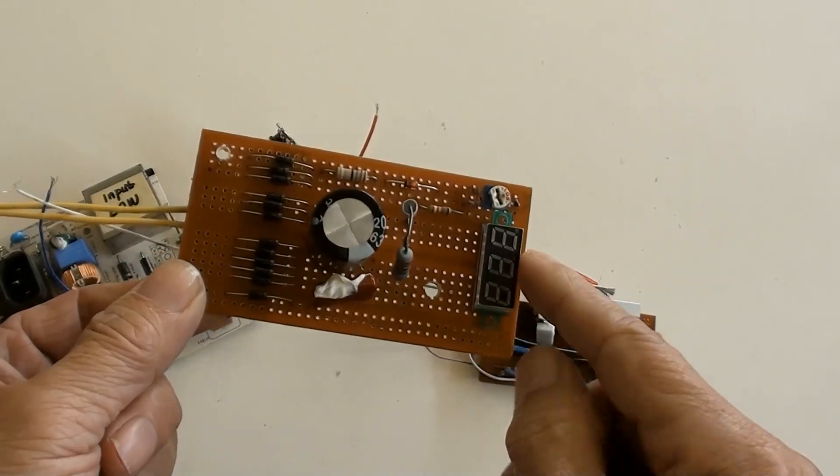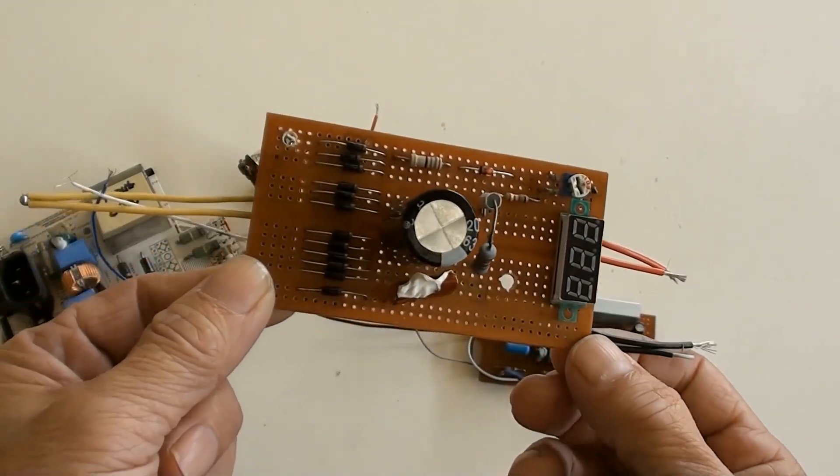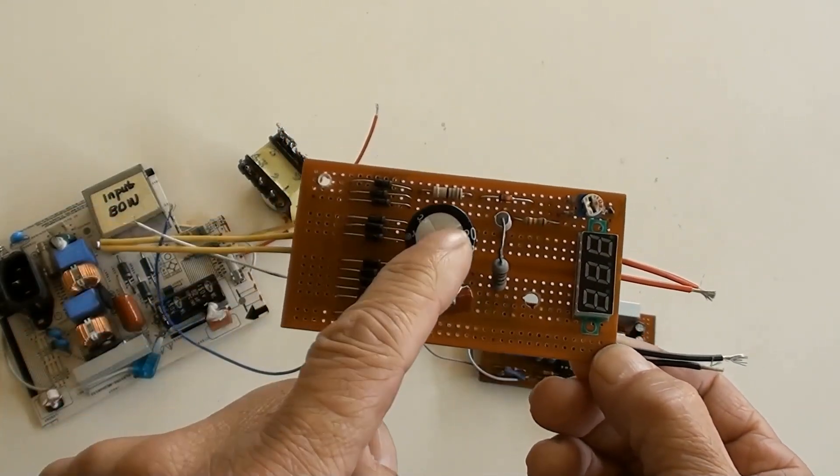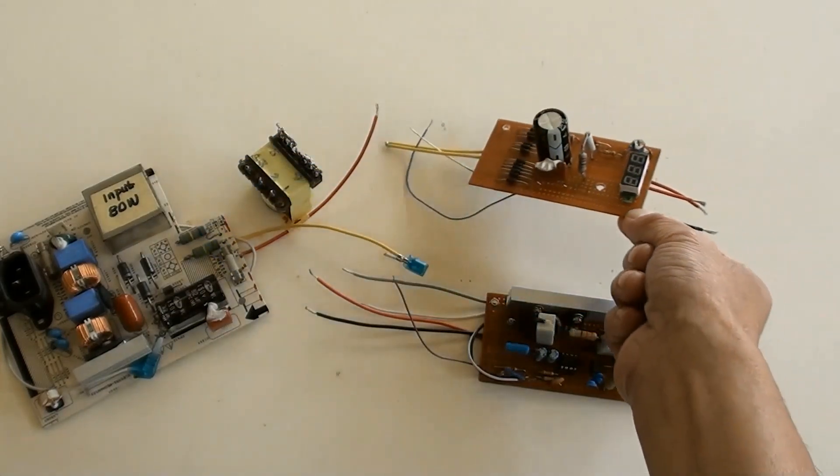Those are the mini digital voltage meter and the output fine adjuster. The converter's DC 12 volt output is produced by this circuit board and its capacity is 60 watt.